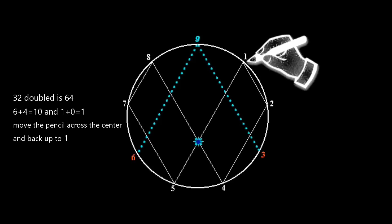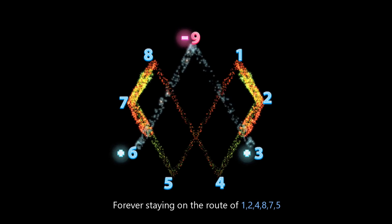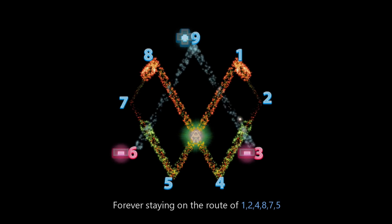Then 32 doubled is 64. And 6 plus 4 equals 10. And 1 plus 0 equals 1. And then you are back to 1. So move the pencil across to the center and back up to 1. Notice the infinity symbol has formed underneath your pencil, creating an ever repeating pattern of 1, 2, 4, 8, 7, 5. This number sequence stays intact as you half numbers as well.